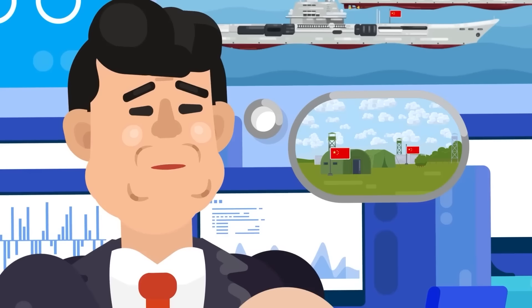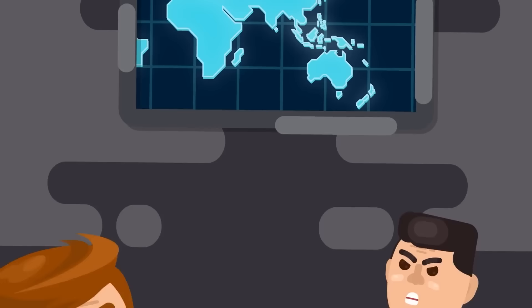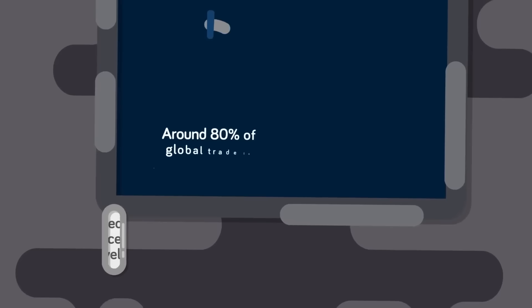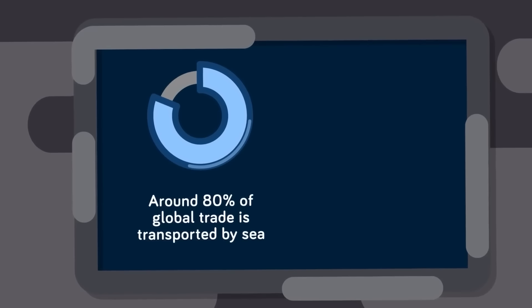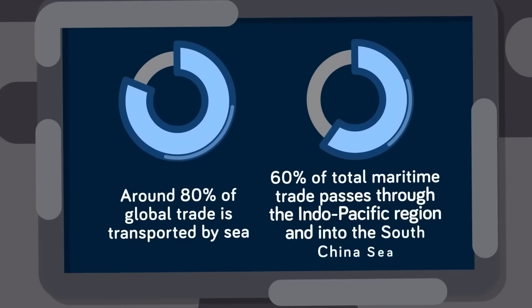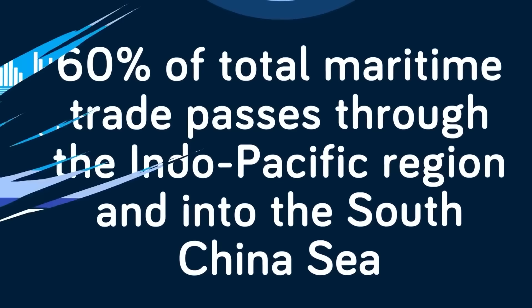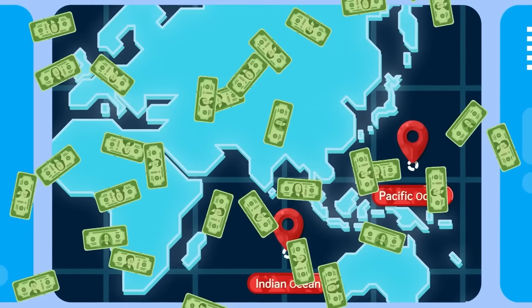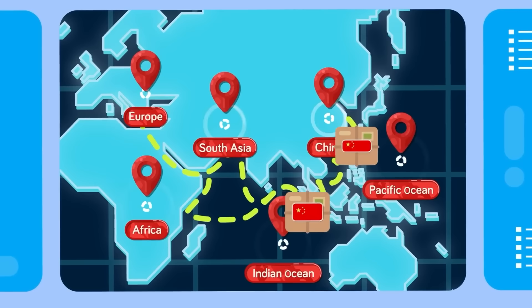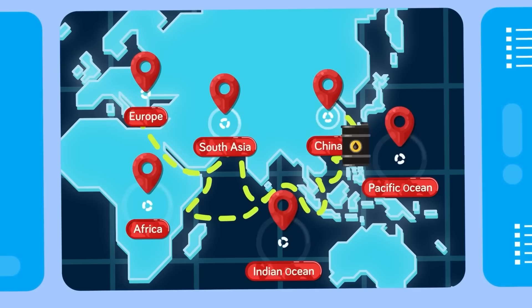It cannot be understated how important controlling the waterways in the region is for both sides. The United Nations Conference on Trade and Development estimates that around 80% of global trade is transported by sea. And an even more astounding statistic is that 60% of total maritime trade passes through the Indo-Pacific region and into the South China Sea. Literally, trillions of dollars in trade pass between the Indian and Pacific Oceans as Chinese goods travel west to South Asia, Africa, and Europe. And at that same time, resources such as natural gas and oil are carried east to fuel China's economy and military. Whoever controls these waterways controls this part of the world.